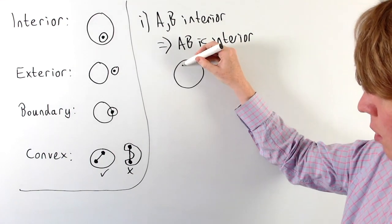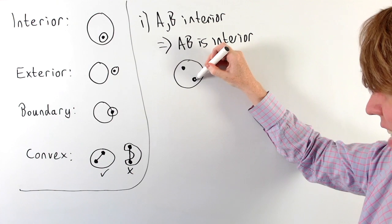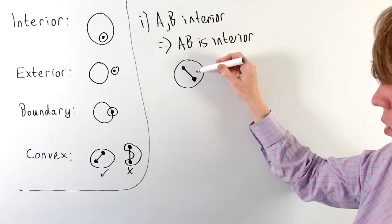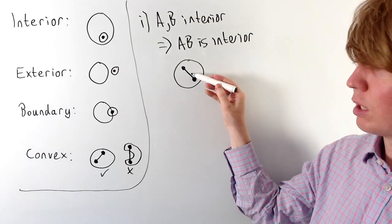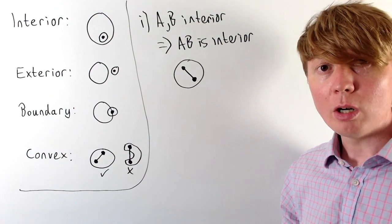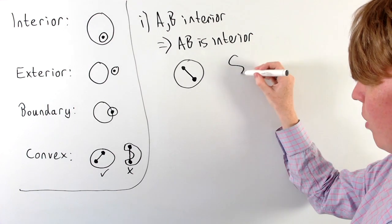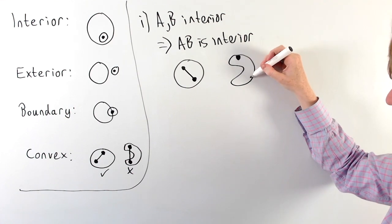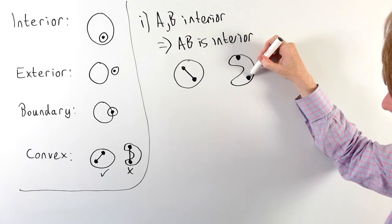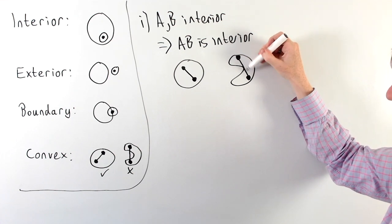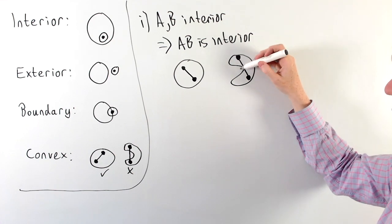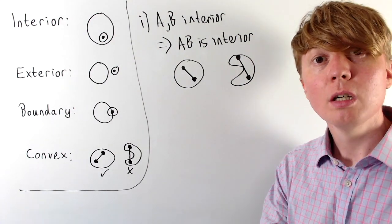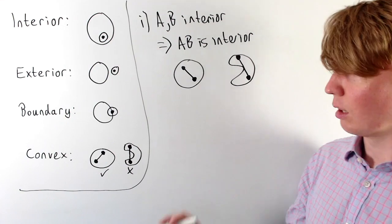We can picture this intuitively: if you've got a point on the inside of your set and another on the inside, as long as it's a convex set, all points between them should also be interior. In a non-convex set, however, you could have a boundary point on the line segment connecting two interior points, or even some exterior points between them.